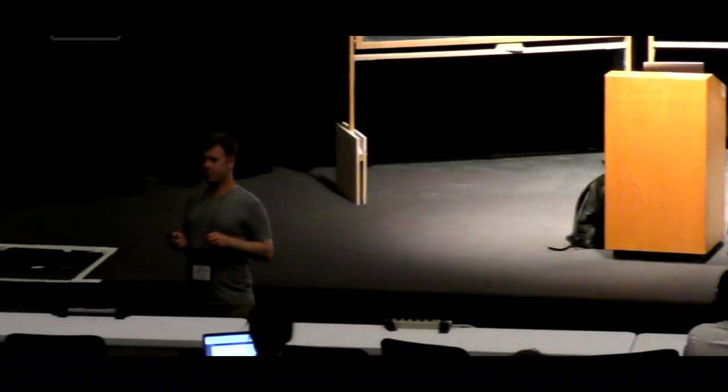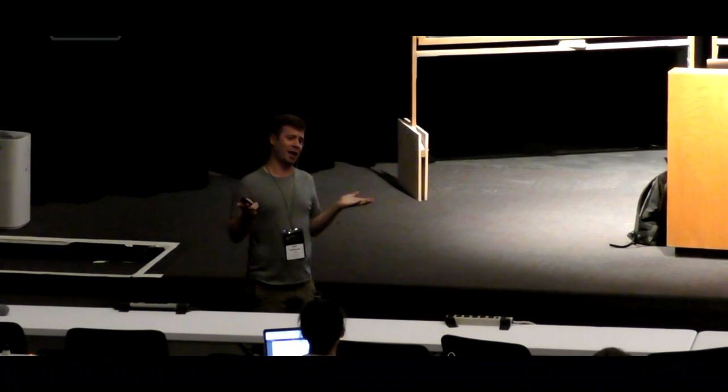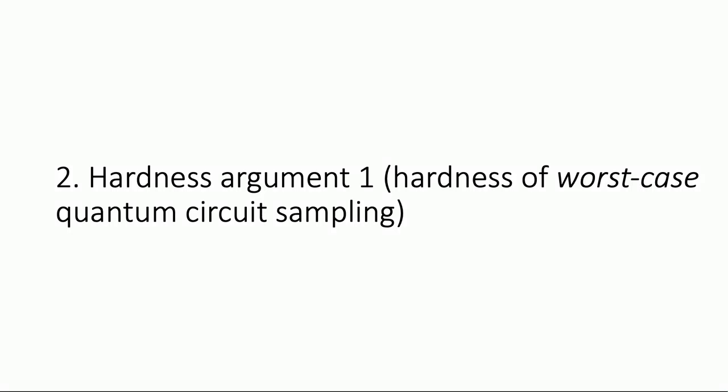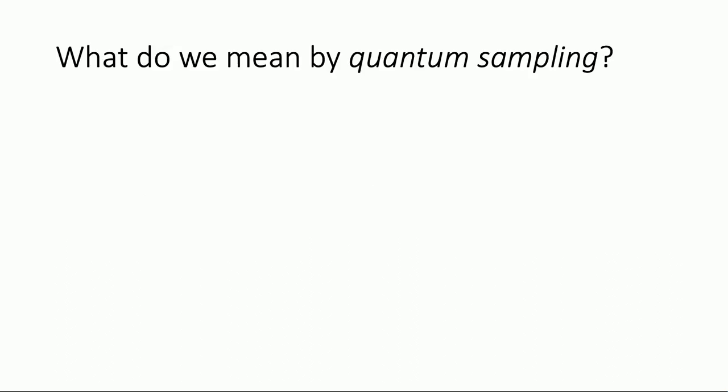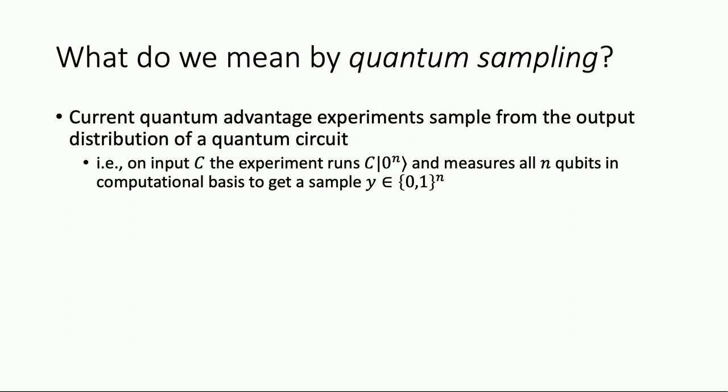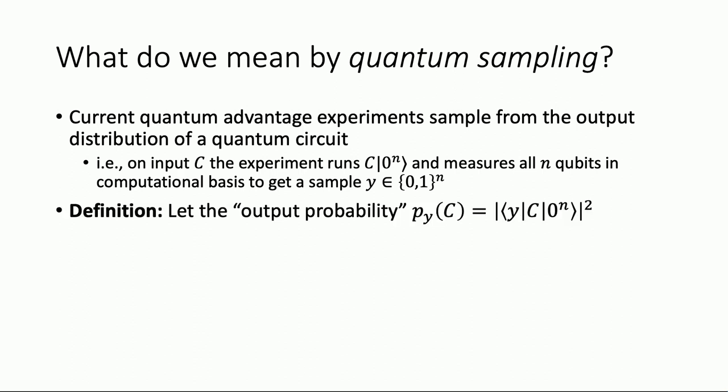Now let me talk about the hardness of worst-case quantum circuit sampling — no random circuits here, just how hard it is to implement a fixed arbitrary quantum circuit and sample from its output distribution. What do we mean by quantum sampling? Current quantum advantage experiments sample from the output distribution of a quantum circuit. On input C — the description of the circuit — the experiment runs C on the all-zero state, measures all N qubits in the computational basis to get a sample from distribution D_C, an N-bit string.